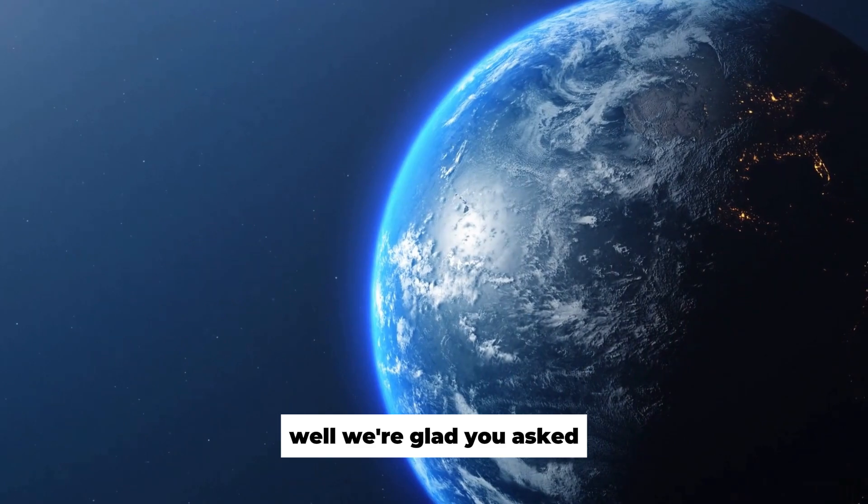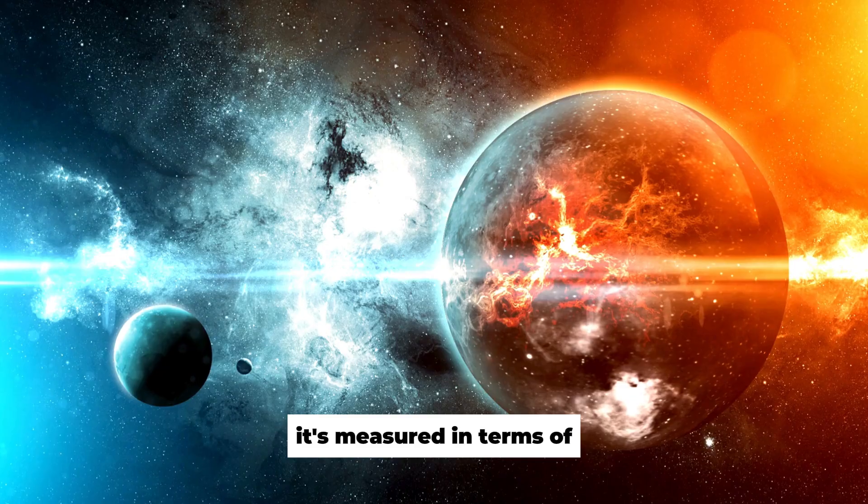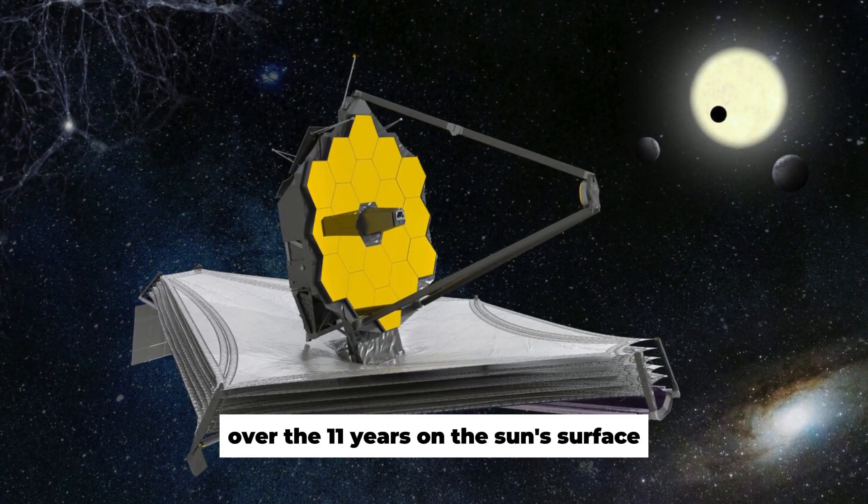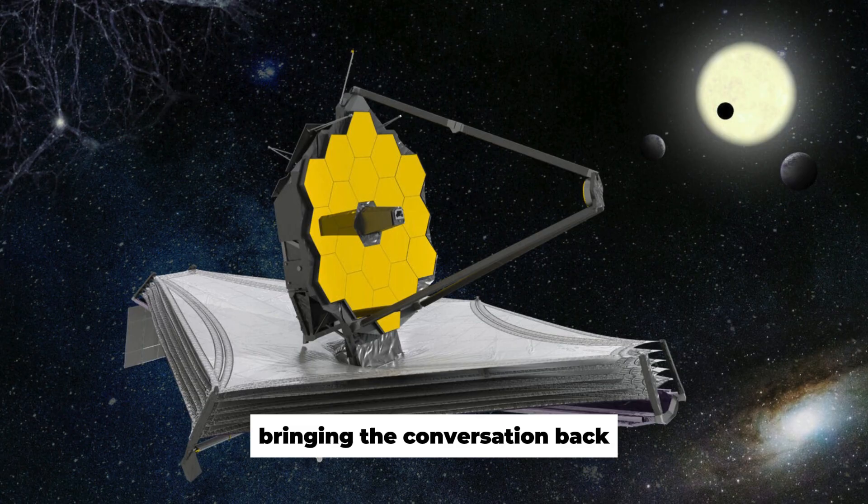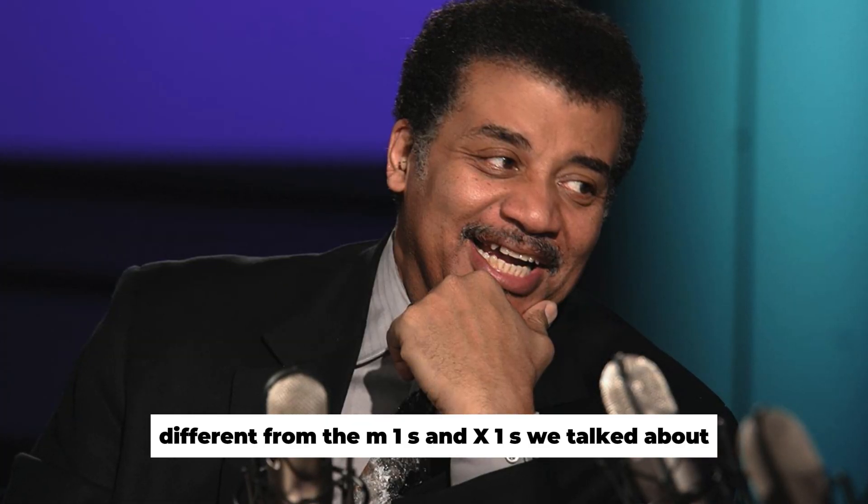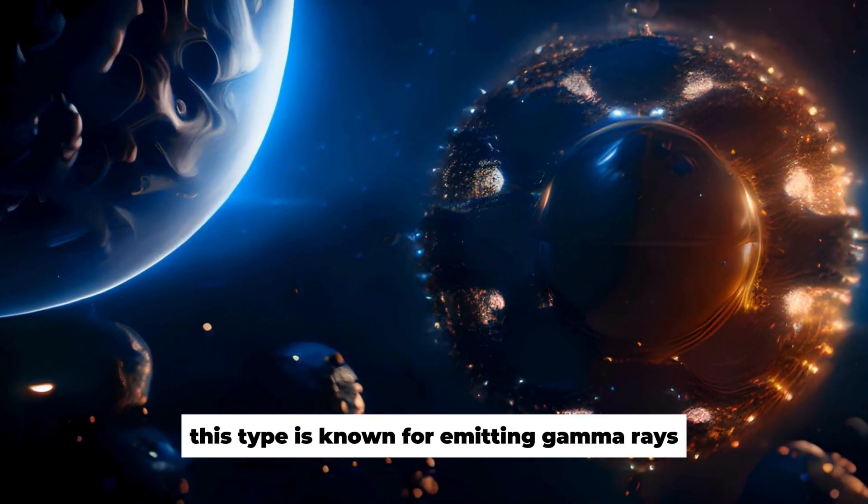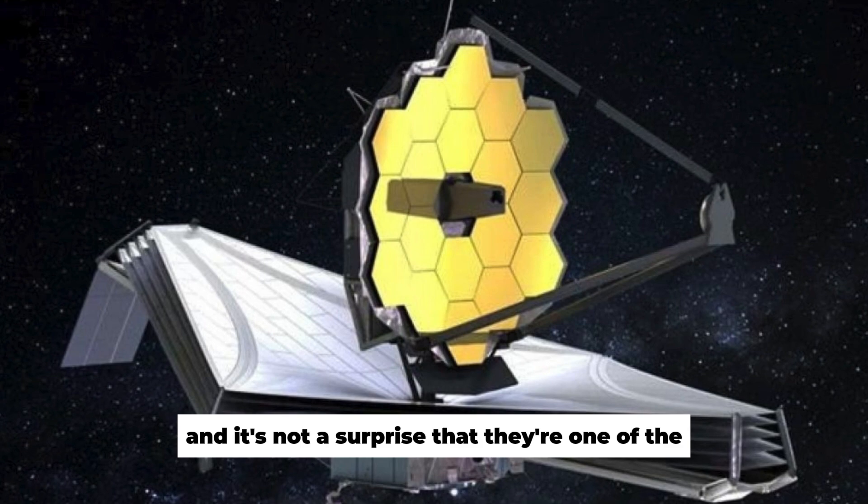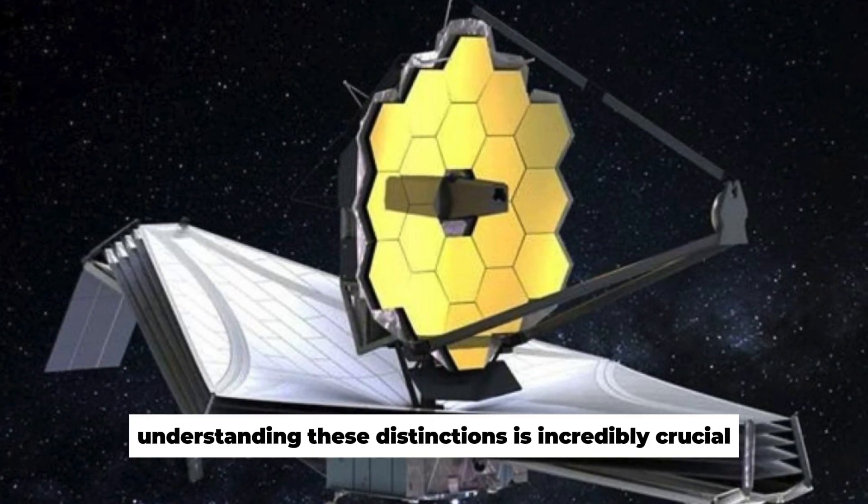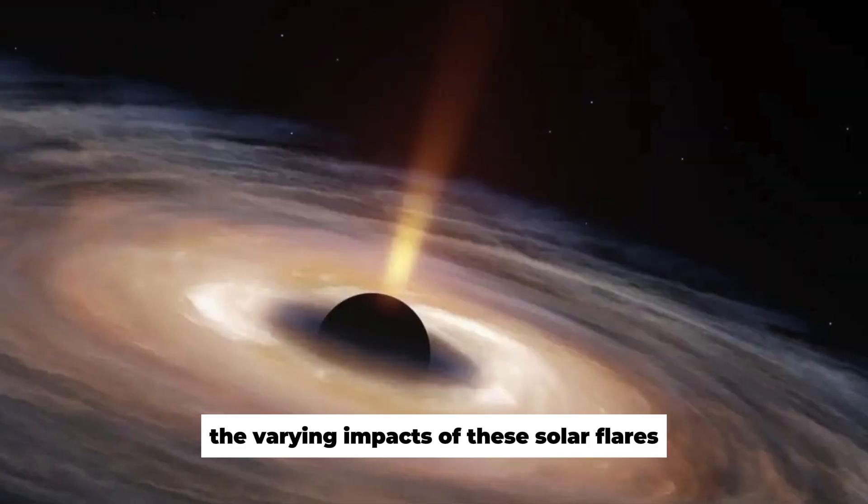Well, we're glad you asked, because the solar cycle is basically the change observed in the sun's activity. It's measured in terms of the number of sunspots that have been seen over the 11 years on the sun's surface. Bringing the conversation back, it's crucial to know that there are a lot more types of solar flares different from the M1s and X1s we talked about. This type is known for emitting gamma rays, and it's not a surprise that they're one of the most dangerous ones because of this very reason. Understanding these distinctions is incredibly crucial, because it helps us grasp the varying impacts of these solar flares.